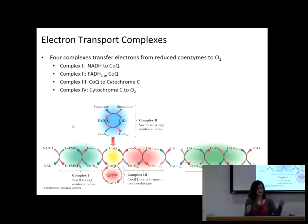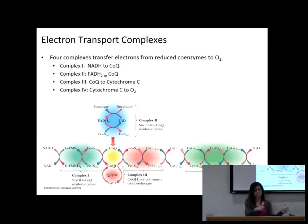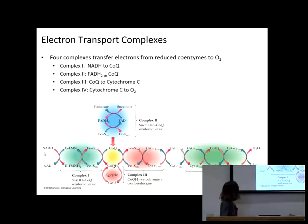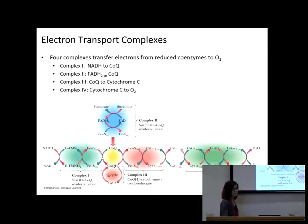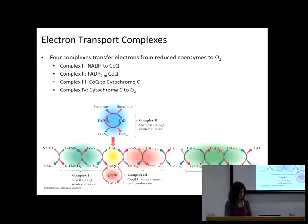Just like in a bucket brigade — you have the water, you pass it off, and then you're going back empty. The electrons go from the iron-sulfur center to the next carrier. In the reduced form, it has the electrons and is passing them along to coenzyme Q. When they're touching at that point, that's where the passing of the electrons happens — you're pouring the electrons from one carrier into the next, and so on down the chain.